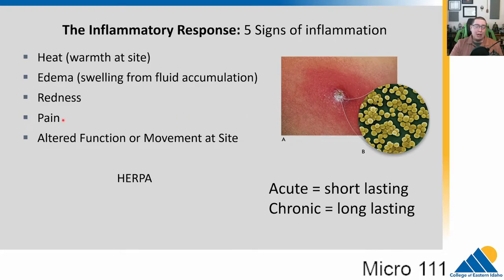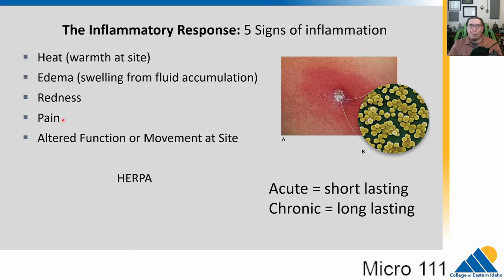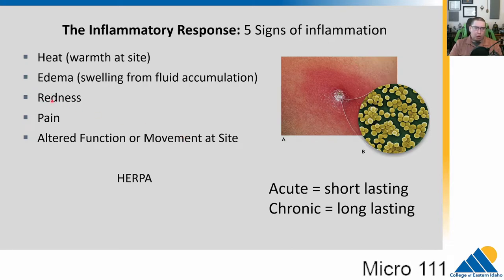Pain is activated by nerves in the region, and basically it's a signal to our body to not mess with that area — if you got a big cut, don't be poking it. It hurts because you shouldn't be touching it. And then we often see altered function or movement at a site when there is inflammation. So if it's in a joint, or if you have lots of pain, you can't move the area. These first three parts are all really related to vasodilation.